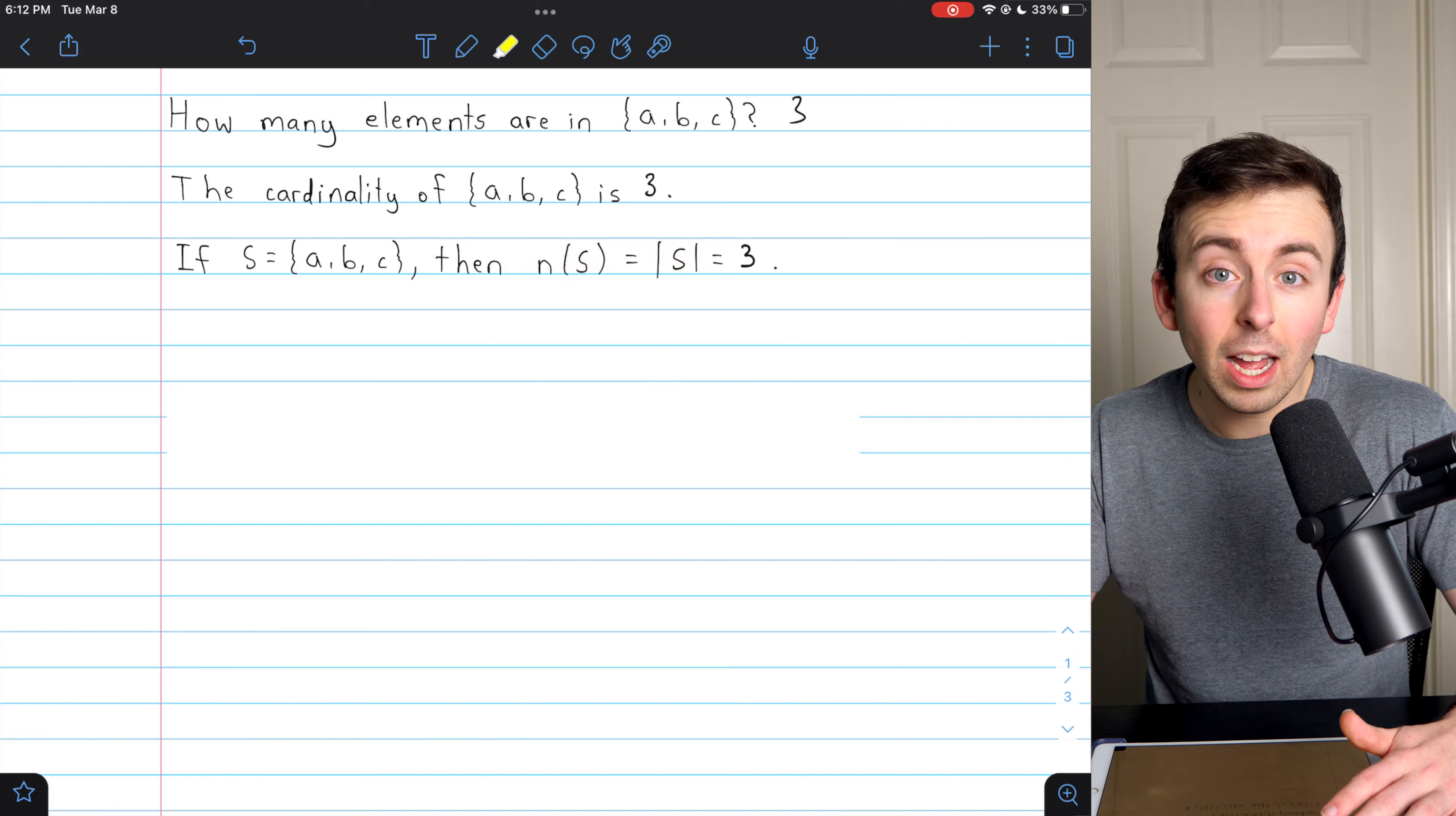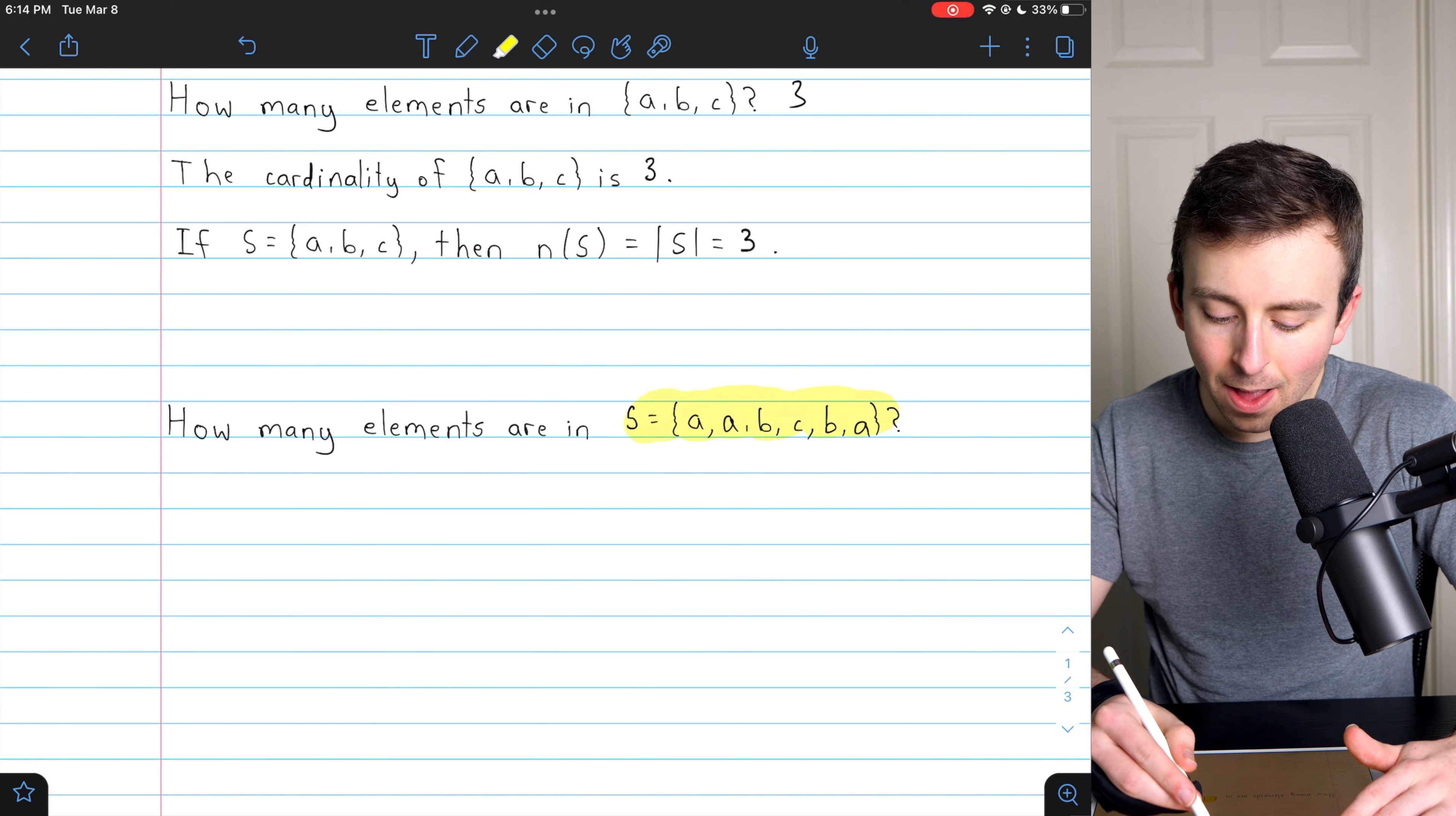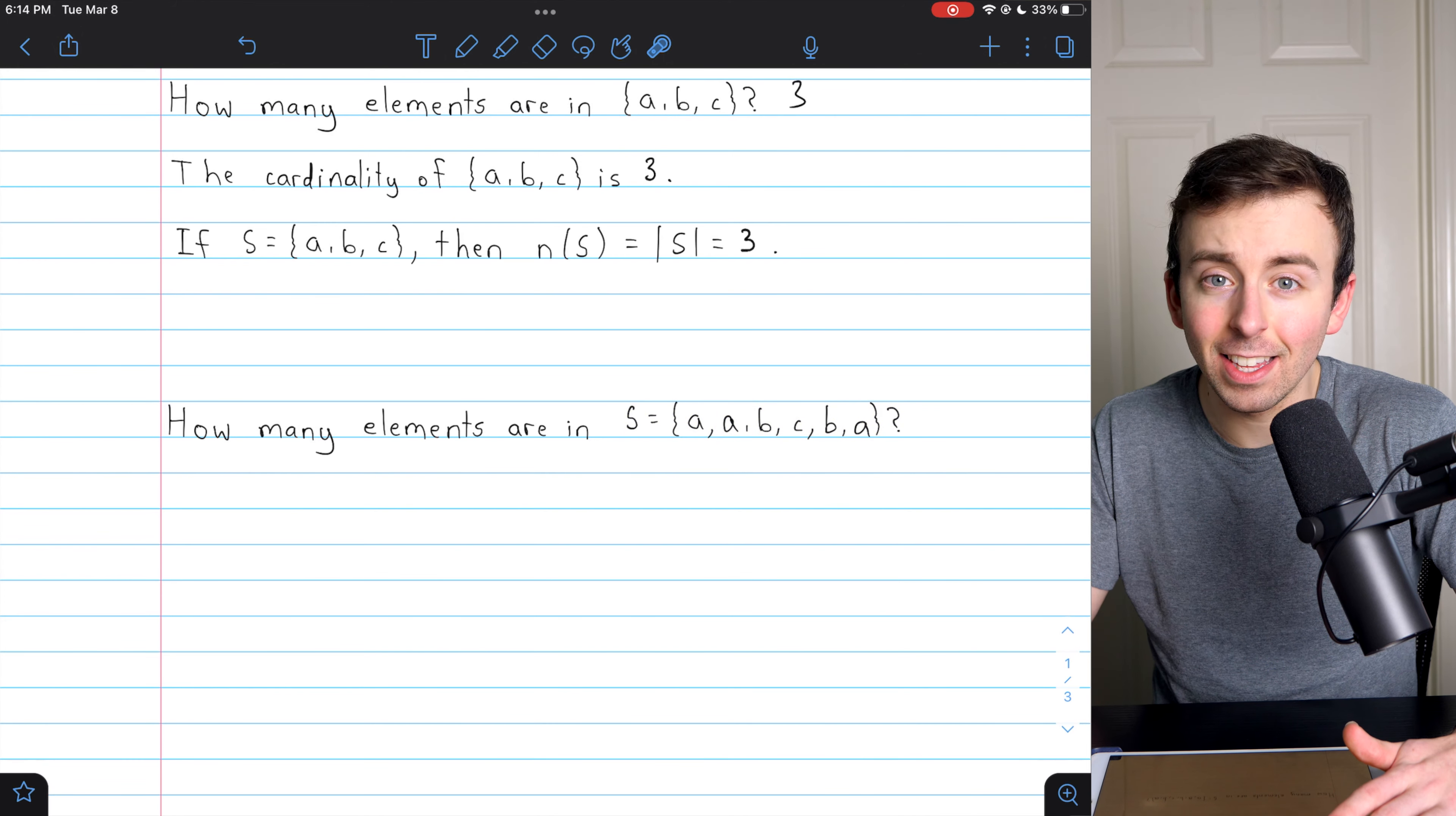Now the question I want to discuss is what if S has repeated elements? Here is an example of what I'm talking about. What if our set is this? It contains A, A, B, C, B, and A. So it has some elements multiple times. How many elements are in this set?